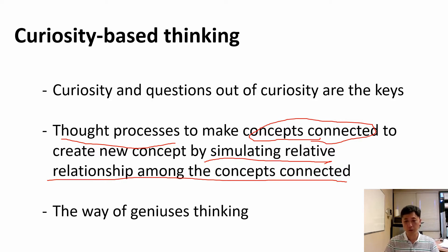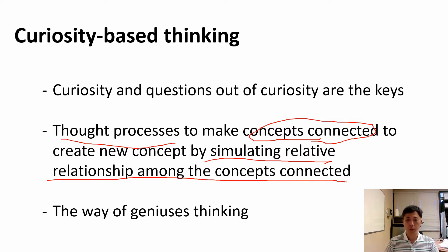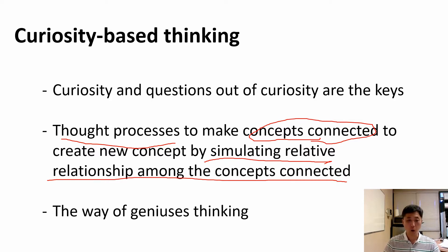Newton's satellite concept didn't exist yet, and he never saw a satellite. The way he created that concept was by simulating what would happen. His brain had to simulate that phenomenon. That is a form of genius thinking — not all, but some geniuses like Newton and Einstein thought this way.